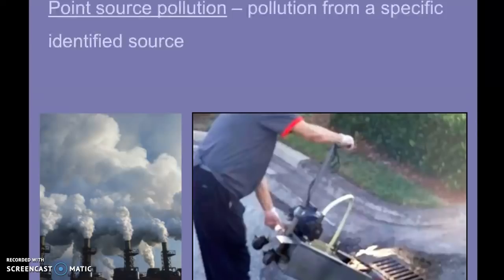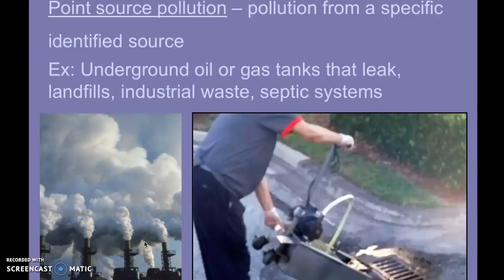There are a couple different categories of pollutants. One is point source pollution — that is pollution from an identified source, so you can tell exactly where that pollutant is coming from. Some pretty common examples are leaking gas tanks, whether underground oil tanks or gas tanks; landfills, because trash doesn't just magically disappear; industrial waste that gets buried underground in barrels which will leak over time; and septic tanks. We talked about how wastewater is cleaned and returned to the environment.